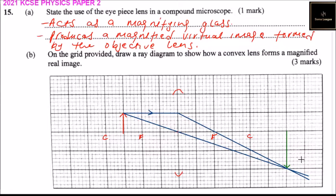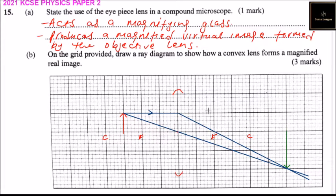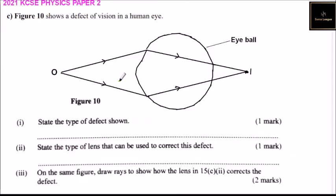That is a magnified image — magnified means the size of the image is bigger than the object. The image formed is bigger than the size of the object. That's how you do that, and you should be able to get three marks, totaling four marks for part B.